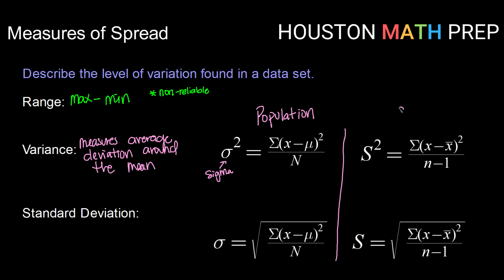For a sample, it's calculated much the same. We use capital letter S squared. We take the sum of our squared deviations — here our mean is represented by x-bar — and we divide by n minus 1. That just comes from it being a sample; it's a concept called degrees of freedom, which we won't get into right now. But a sample is calculated just a little bit differently than a population.